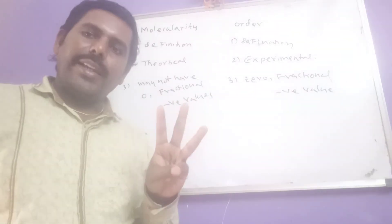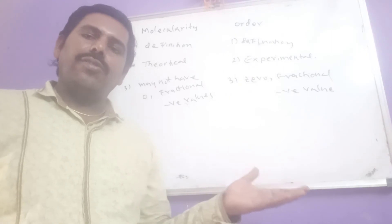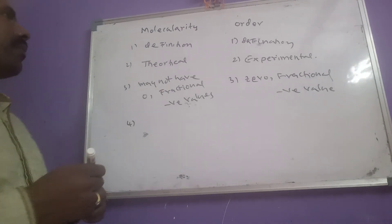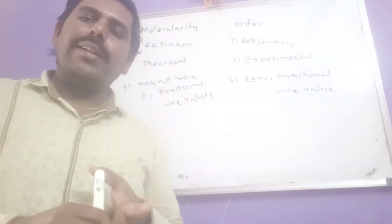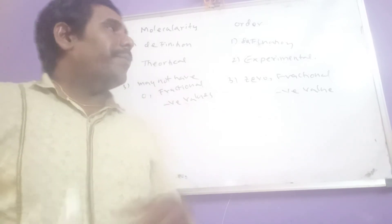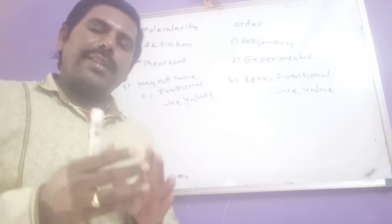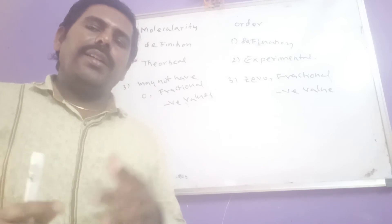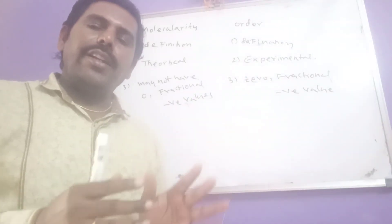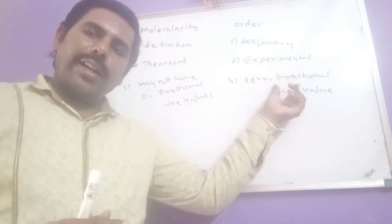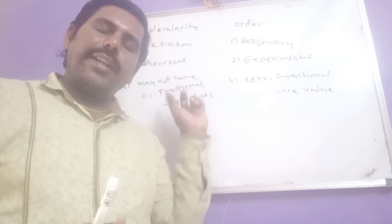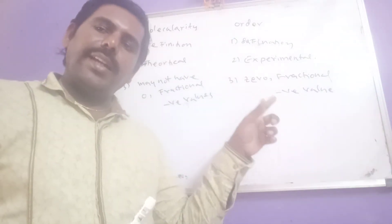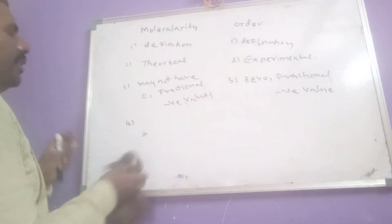Maximum molecularity is 3 and maximum order is also 3, so there is no difference there. Another difference: molecularity is related to individual steps of a complex reaction, whereas order is related to the overall reaction. These are the differences between molecularity and order.